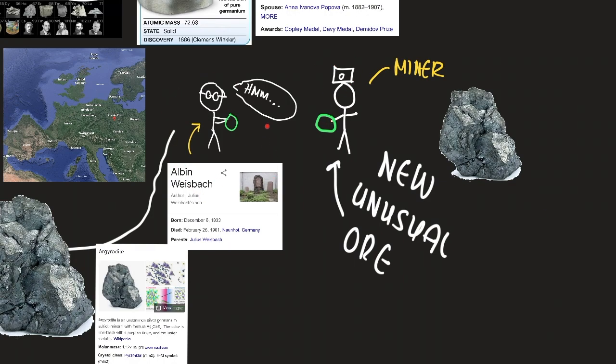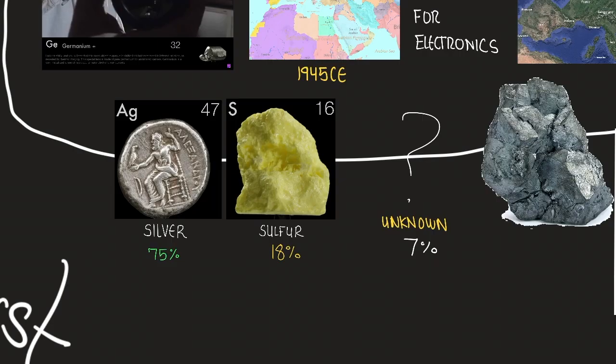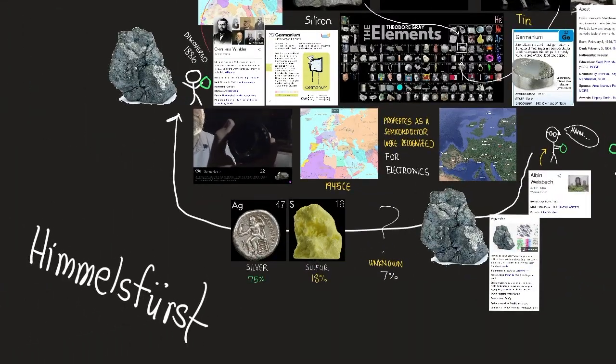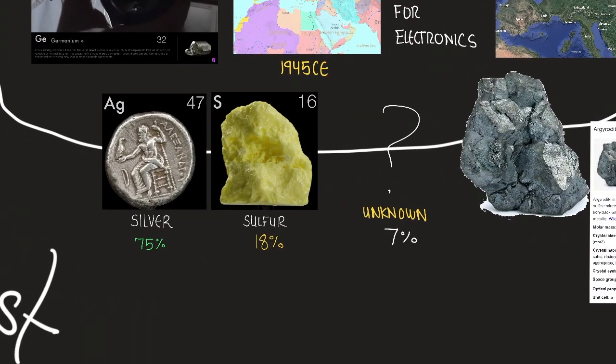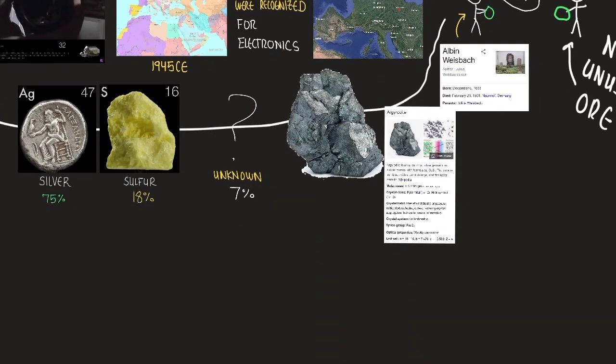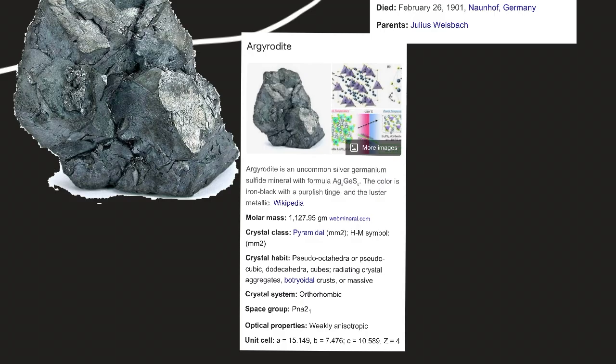So he gives the ore to Albin Weischbach. He's a colleague of Winkler. He was born December 6, 1833. So Winkler found its composition to be 75% silver, 18% sulfur, and 7% which he could not explain. It was an unknown element. We now know that it's germanium but back then it was unknown so it was pretty exciting. So by February of 1886, he realized it was a new metal-like element and its properties were revealed. It became clear that it was the missing element below silicon as Mendeleev had predicted. The mineral from which it came to be known as Argodite.